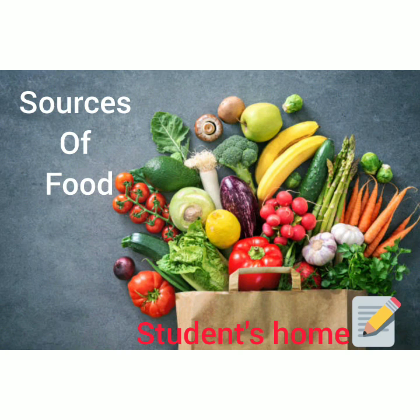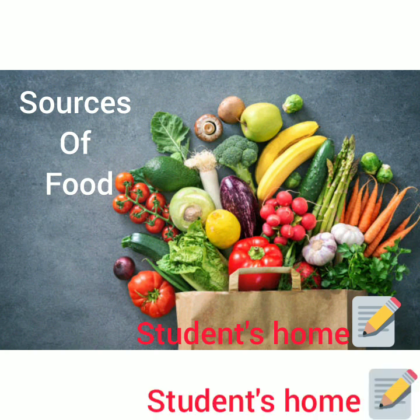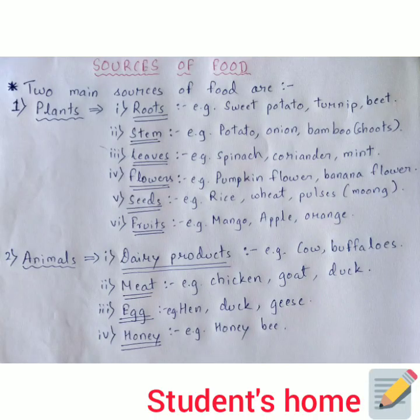Okay class, now we are going to discuss the sources of food. As you can see in the picture, there are two main sources of food: number one is plant and number two is animal.